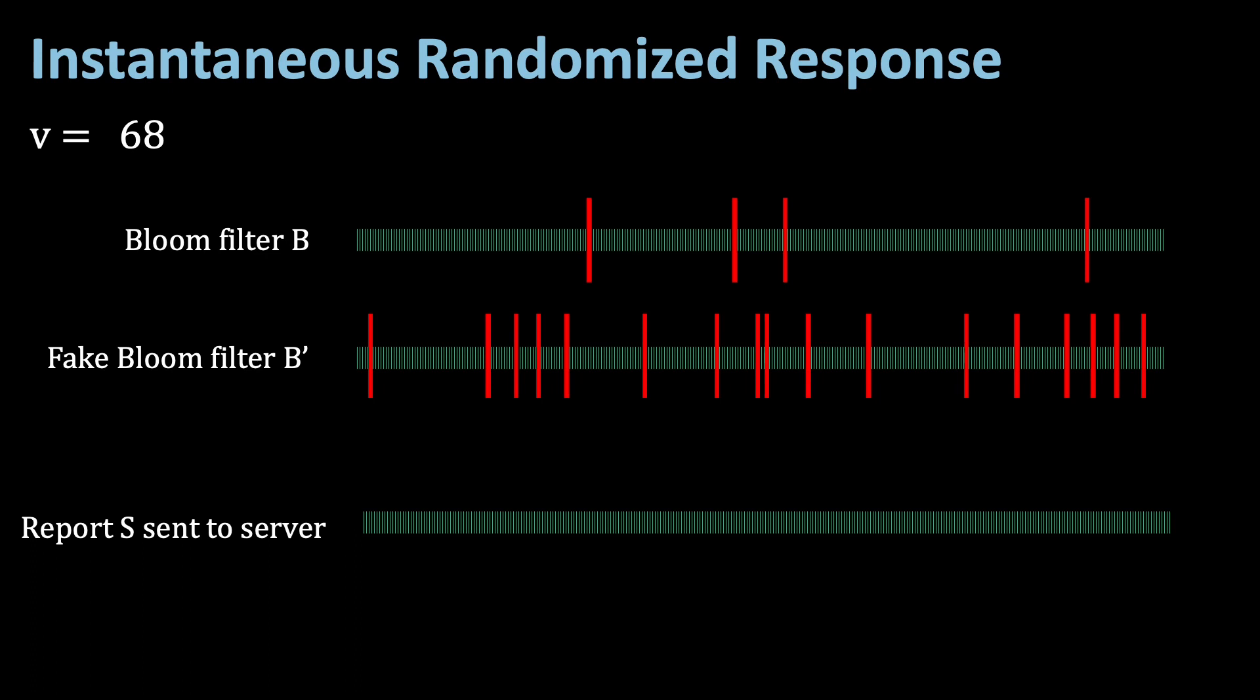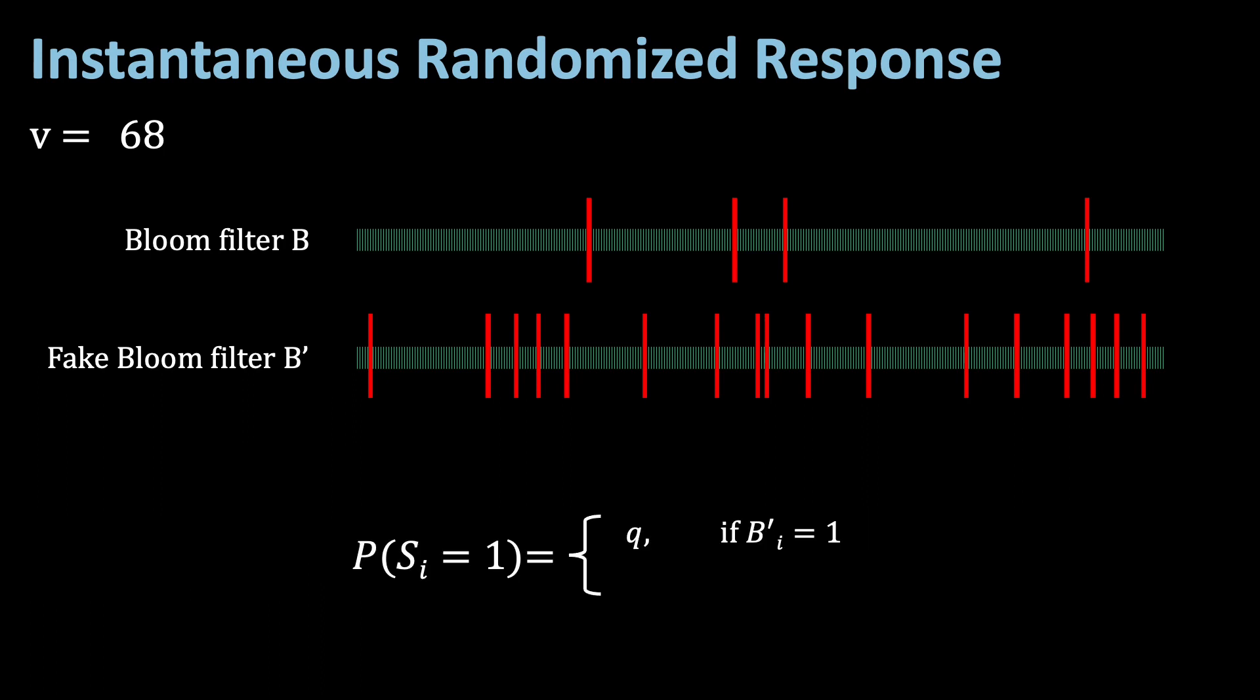Again, we change the bits according to some probabilities. The probability that they are set to 1 is Q if the corresponding bit in the bloom filter is 1 and P if the corresponding bit is 0. Remember, Q and P are two variables, two parameters of rapport, which we can set according to our privacy needs. So P and Q are two tunable parameters to control the probability of the bits in S.